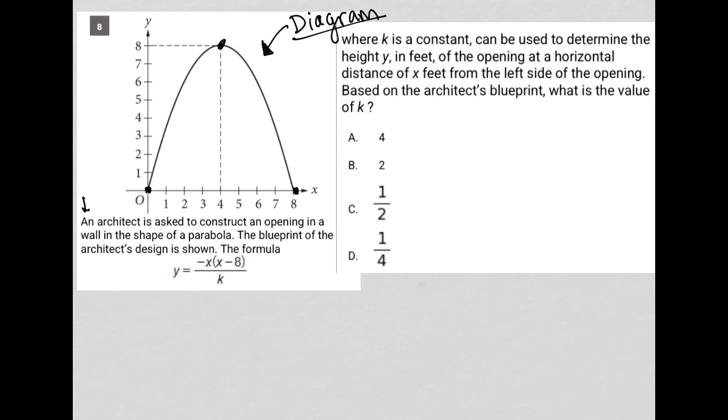It says, an architect is asked to construct an opening in a wall in the shape of a parabola. The blueprint of the architect's design is shown. The formula is this here, where k is a constant can be used to determine the height, y, in feet of the opening at a horizontal distance of x feet from the left side of the opening. Based on the architect's blueprint, what is the value of k?